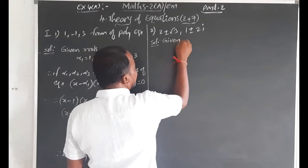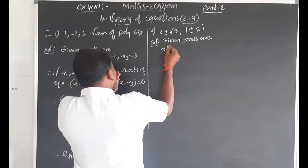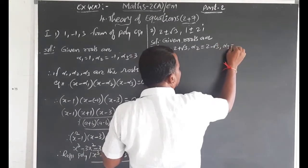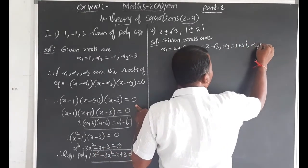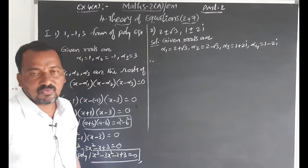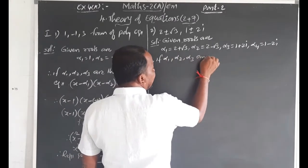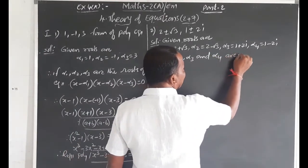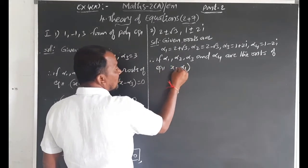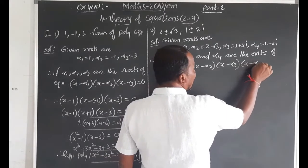The given roots are: α₁ = 2 + √3, α₂ = 2 - √3, α₃ = 1 + 2i, α₄ = 1 - 2i. Since α₁, α₂, α₃, and α₄ are the roots of the equation, the equation is (x - α₁)(x - α₂)(x - α₃)(x - α₄) = 0.